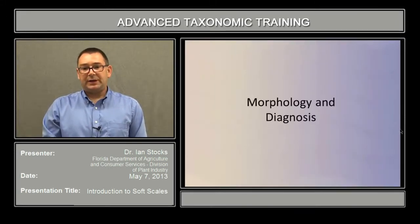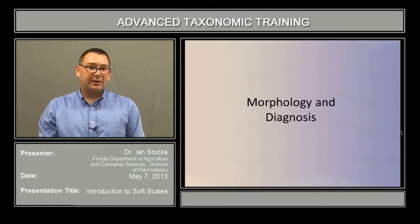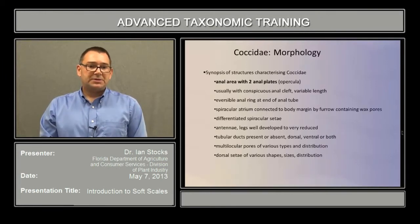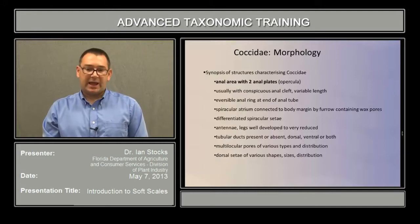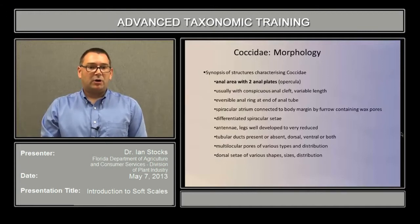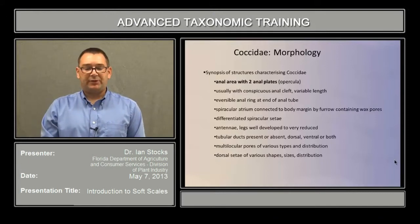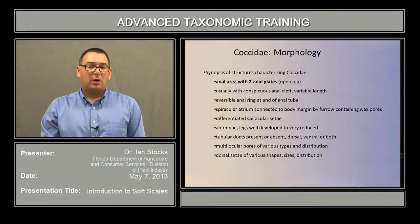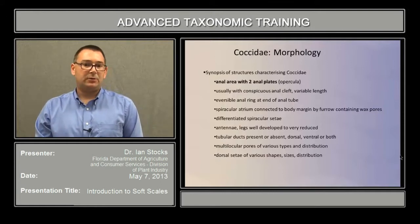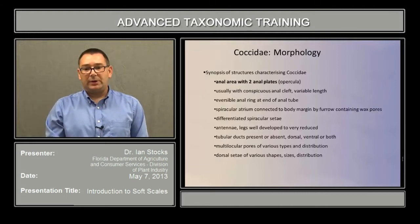We'll now move on to the morphology and diagnosis part of the presentation, where we'll discuss the features that you'll need to understand in order to identify any given soft-scale specimen. The most important character overall is the presence of the anal area with two anal plates, otherwise known as a percula. Almost all soft scales have this, though there are one or two exceptions. Usually there will be a conspicuous anal cleft, though that can be variable in length depending on the species, and a reversible anal ring at the end of the anal tube.